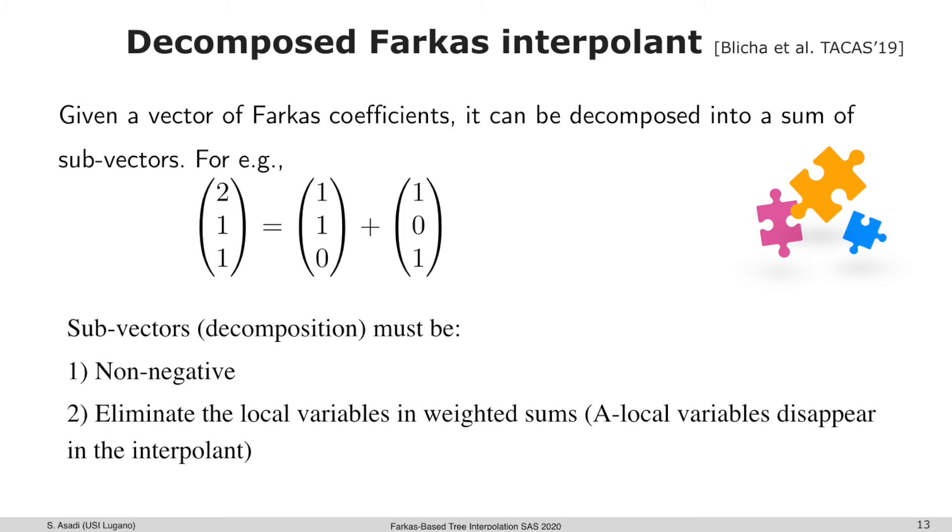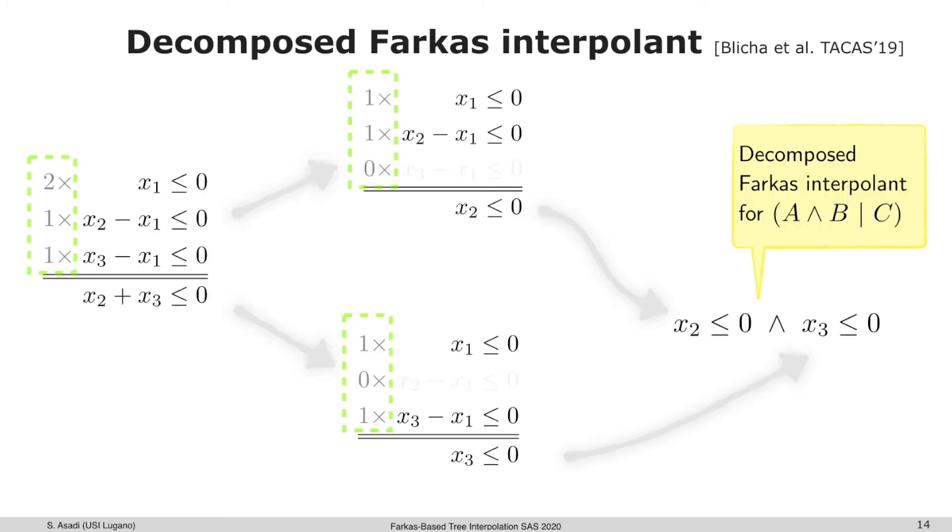So how is it done? By decomposing the vectors, we can immediately get the conjunctive interpolants: x2 less than or equal to zero conjoined with x3 less than or equal to zero. This is pretty nice, and it's stronger than the other versions.